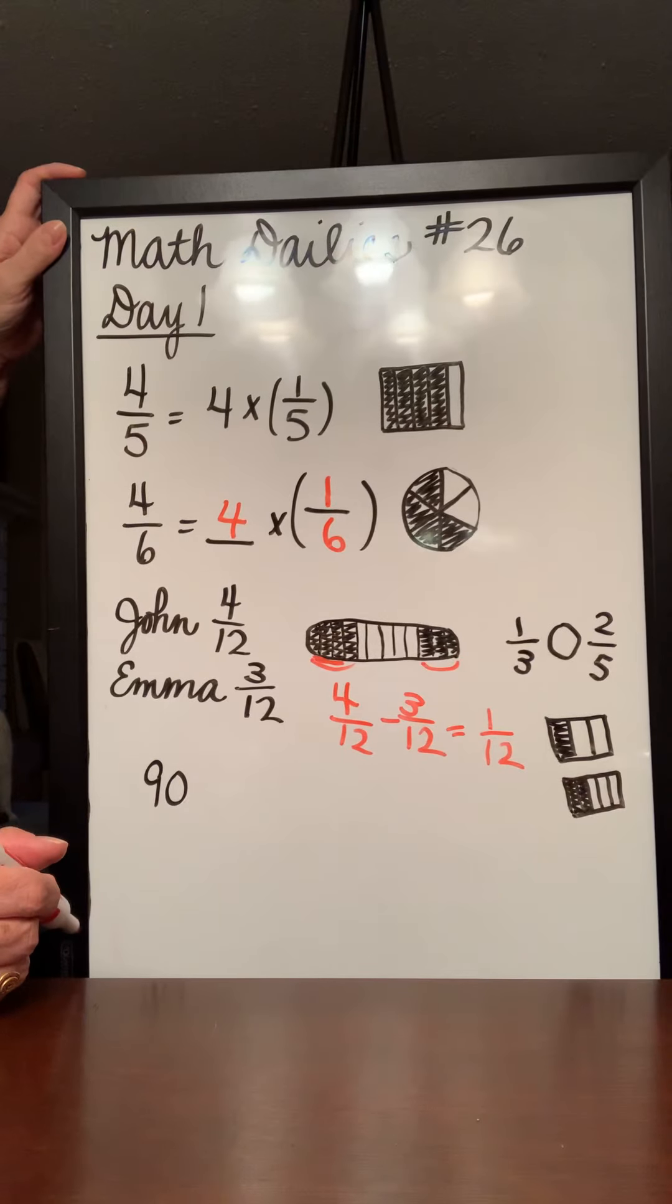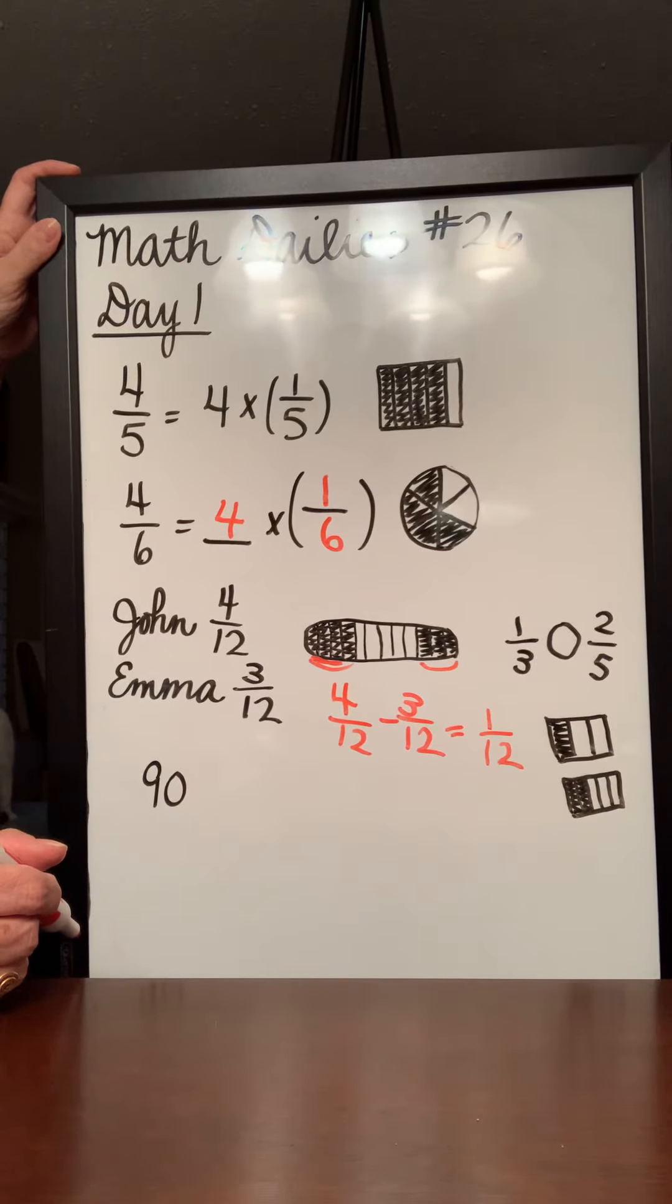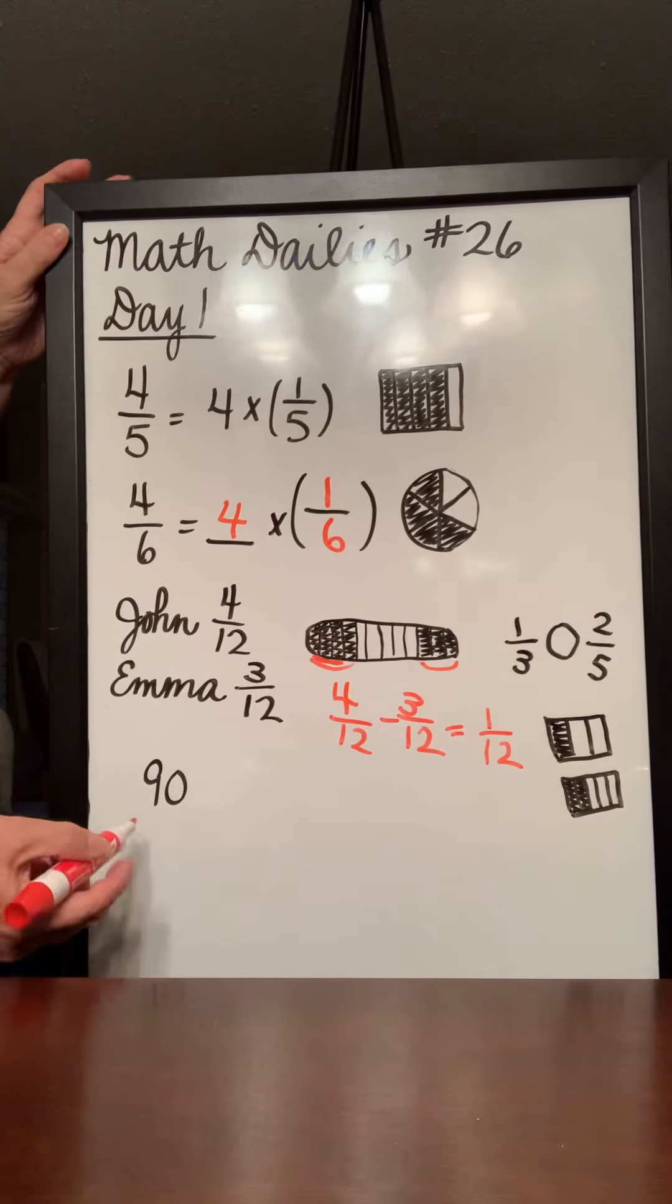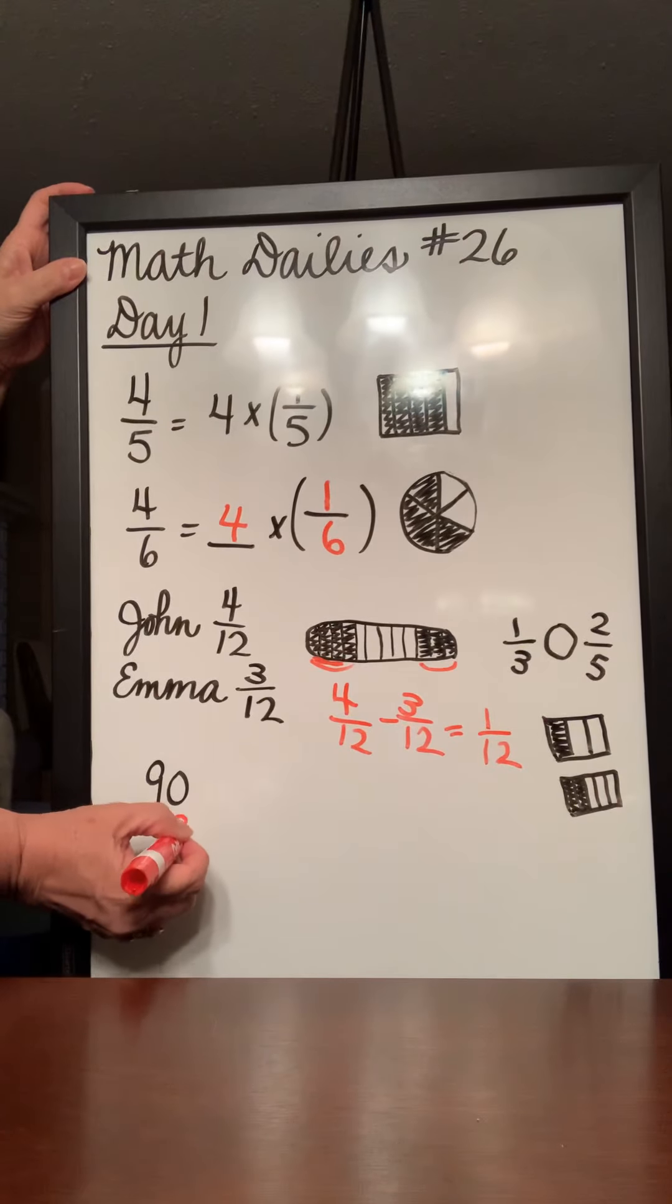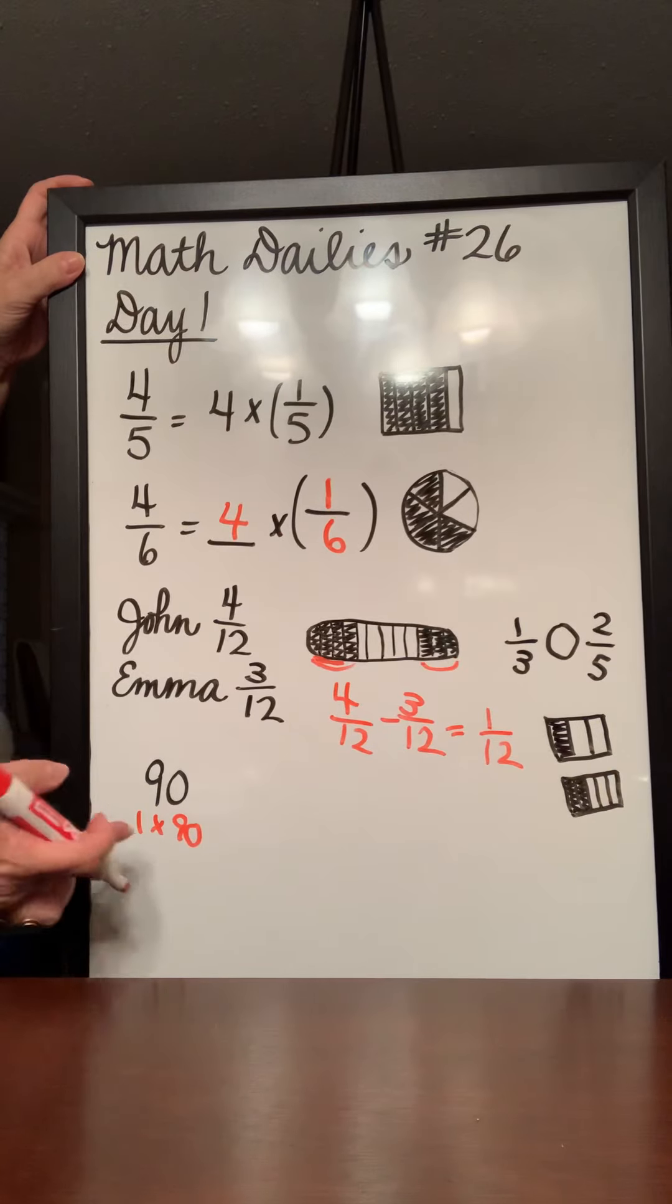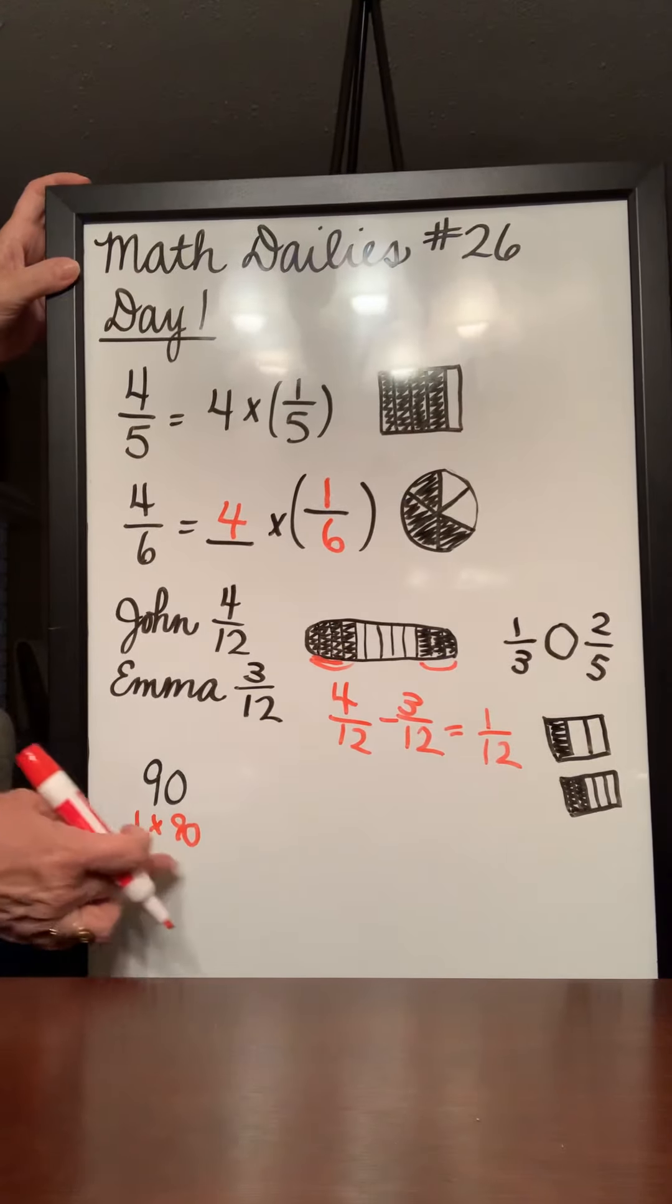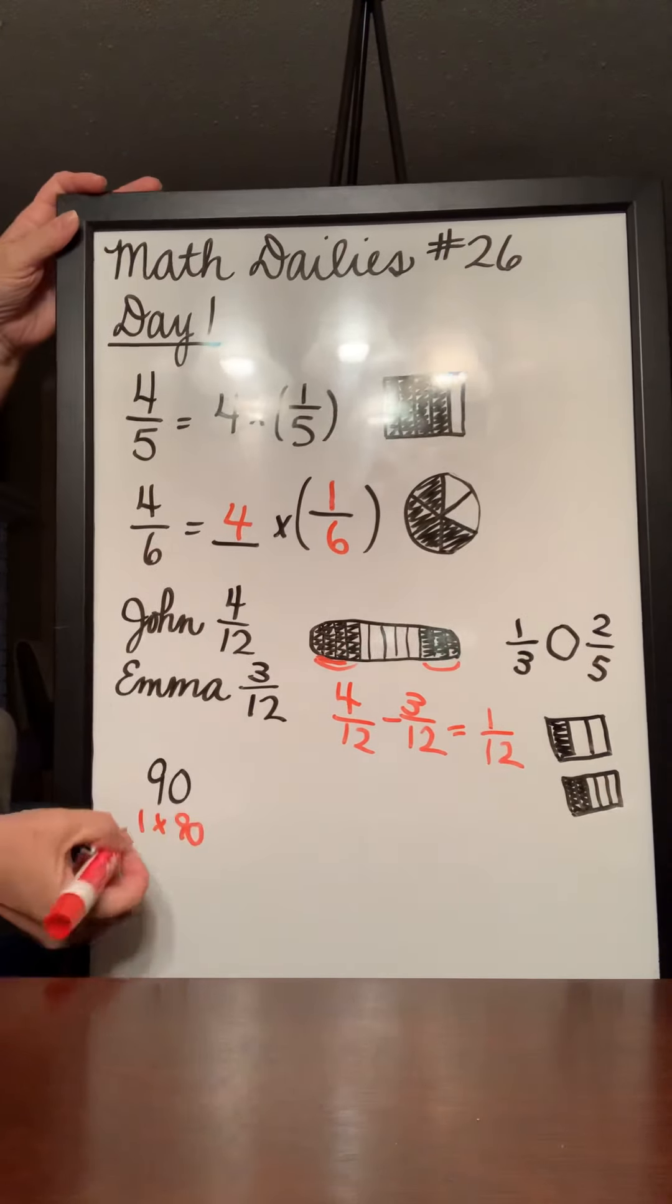Okay, the next one is list the factors of 90. And is this number prime or composite? So the first thing we know is that you can get this number by multiplying 1 and that number. So 1 times 90 we know is 90. So those are two of our factors, 1 and 90.